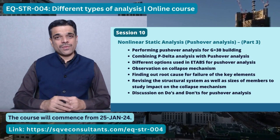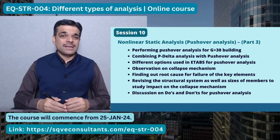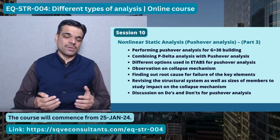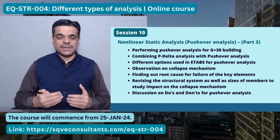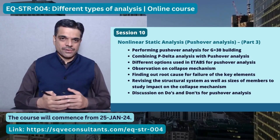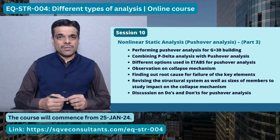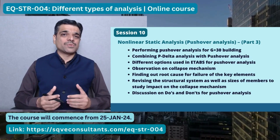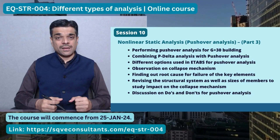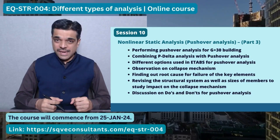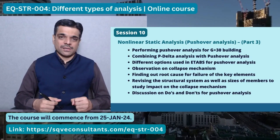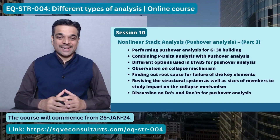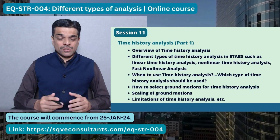In the next session, we will perform push-over analysis on the G+30 building, combining it with P-delta analysis to include geometrical non-linearity along with material non-linearity. After performing the analysis, we will observe the collapse mechanism, and if it is not as desired, we will perform several iterations and discuss the resulting data.